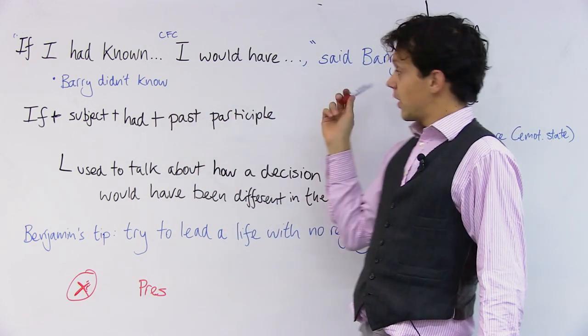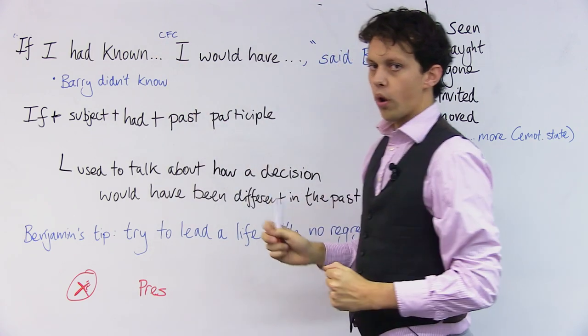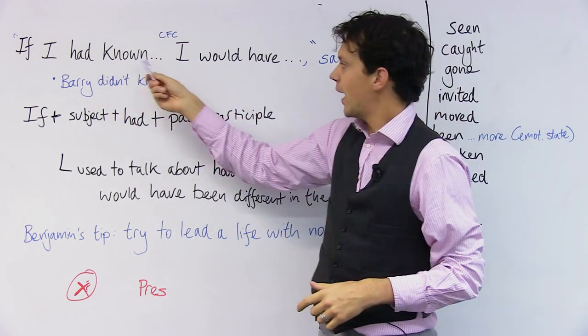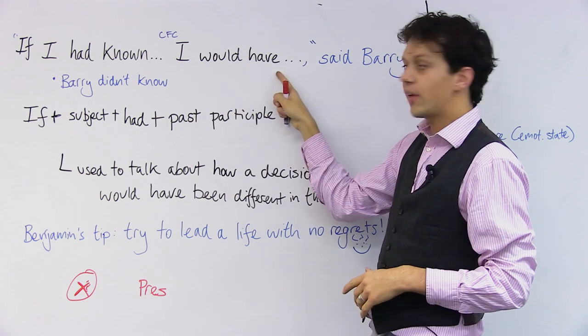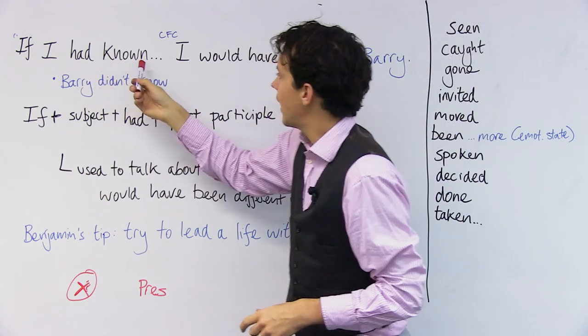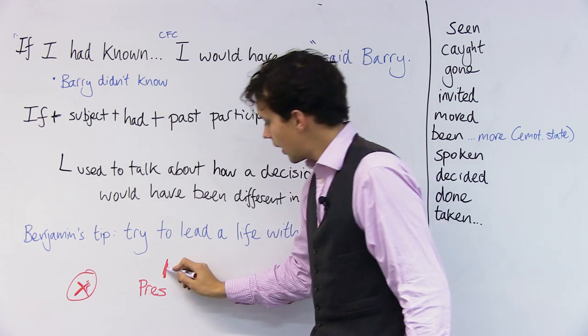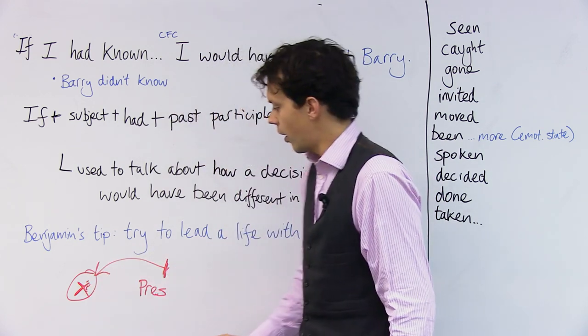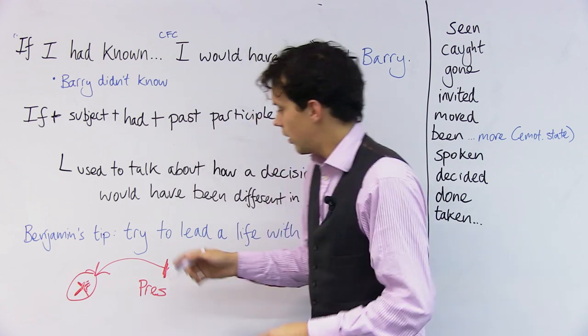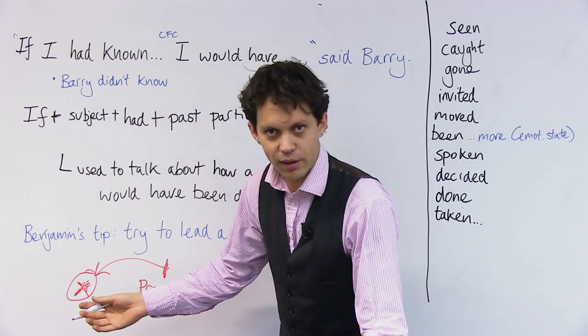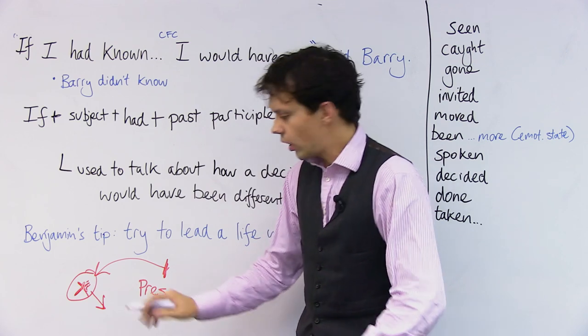Well, this is what Barry said. Notice the speech marks. This is the actual words of my friend Barry. If I had known that Chelsea were playing at home, I would have gone to see them. So he's here in the present, and he's looking back to a point in the past. And he's saying if at this point here, he had known that Chelsea, a football team, were playing at home at Stamford Bridge, he would have gone there. But at the time, he did not know.